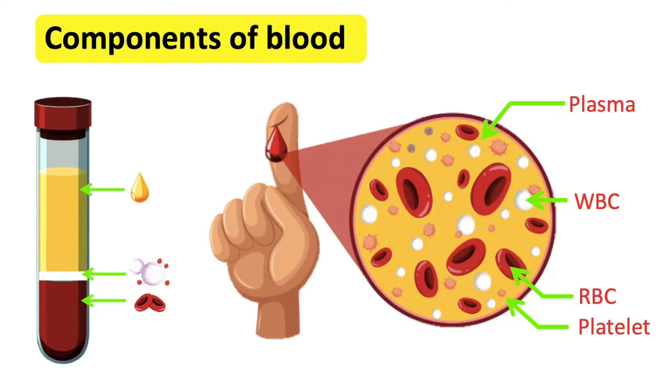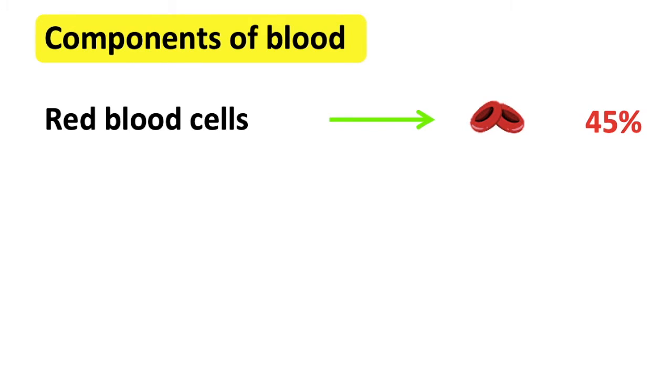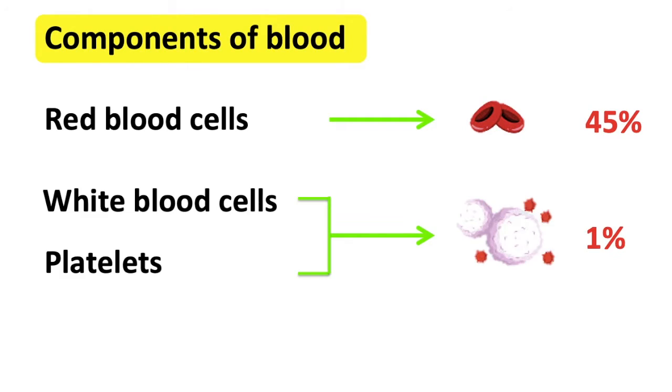The components of blood are red blood cells, white blood cells, platelets, and blood plasma. The proportions are 45% red blood cells, around 1% white blood cells and platelets, and 55% plasma.